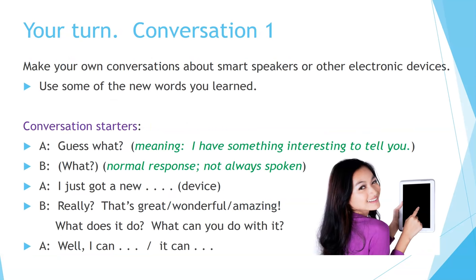Make your own conversations about smart speakers and other electronic devices. Use some of the new words you learned. Here are some phrases you can use to get you started. If we want to talk about a certain topic, sometimes we start the conversation with the phrase 'Guess what?' — this means I have something interesting to tell you. Normally another person might say 'What? Tell me.' Sometimes you just tell them the information. 'I just got a new device' — whatever that machine or device is. 'Really? That's great. That's wonderful. That's amazing. What does it do? What can you do with it?' 'Well, I can' or 'it can.' This is a good way to start a conversation and continue it with your partner.